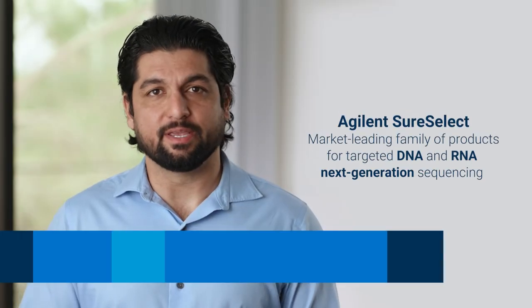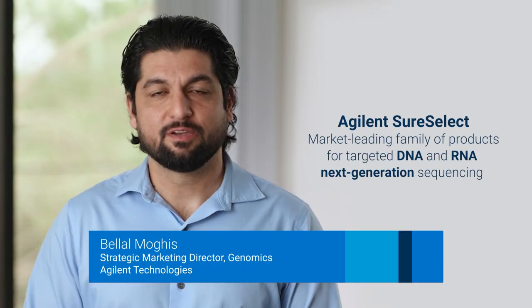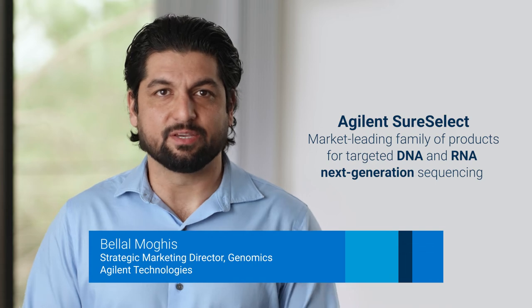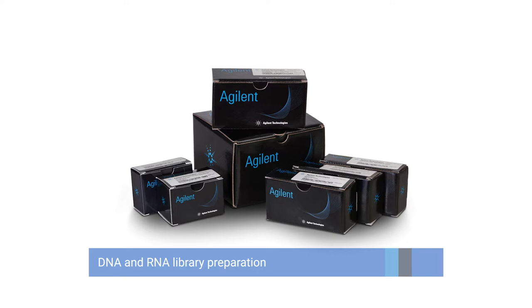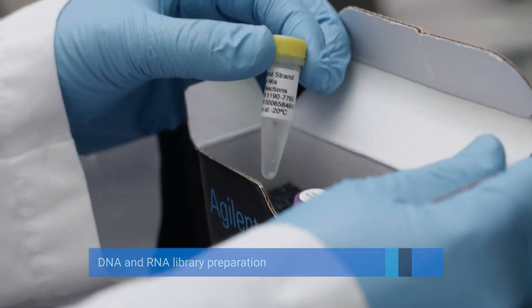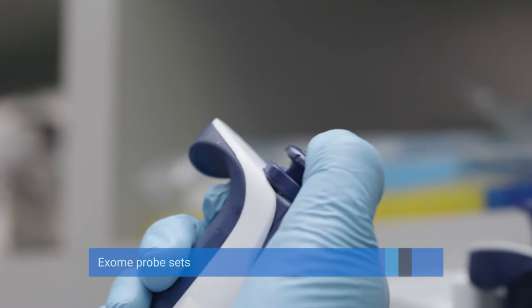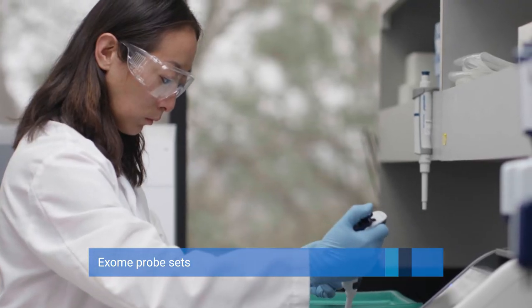Agilent SureSelect is our market-leading comprehensive family of products for targeted DNA and RNA sequencing. SureSelect products include DNA and RNA library preparation kits, catalog and custom NGS panels, and exome probe sets that offer trusted proven performance.